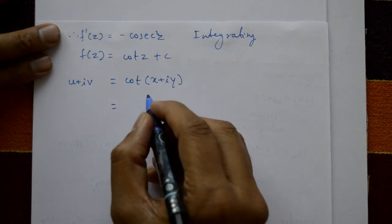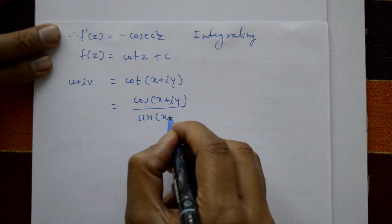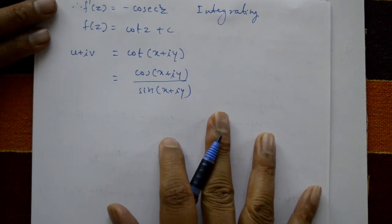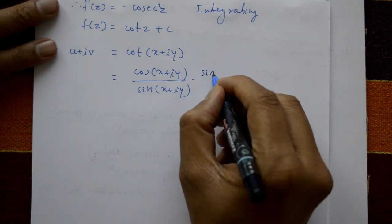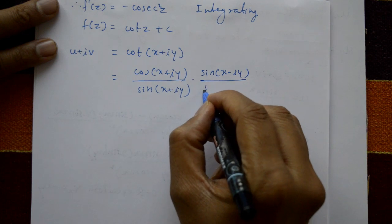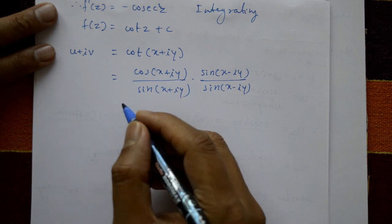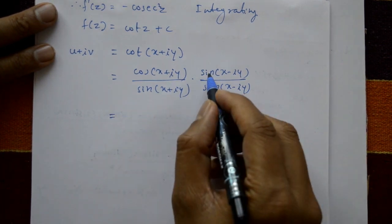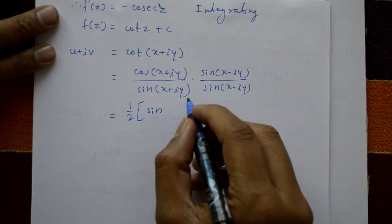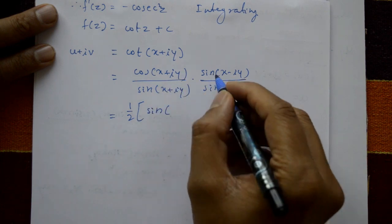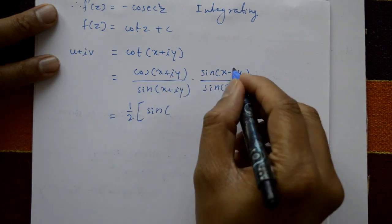cot(z) means cos(x+iy) / sin(x+iy). Now separate real and imaginary parts. Multiply and divide by the conjugate sin(x - iy) / sin(x - iy). Using the formula sin(a)·cos(b) = (1/2)[sin(a+b) + sin(a-b)].